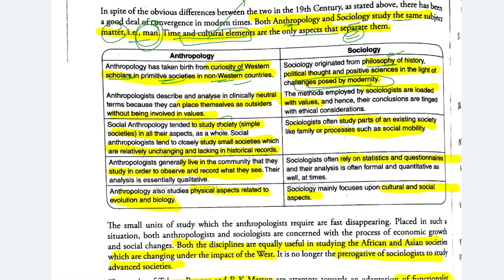Social anthropology tended to study simple societies — parts of an existing society like family, or social processes like social mobility. Anthropologists analyze in clinically neutral terms because they can place themselves as outsiders, without being involved in the values of that society since it is different from their own culture. Sociology, by contrast, is value-loaded.